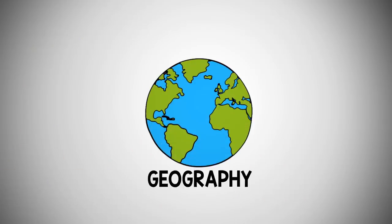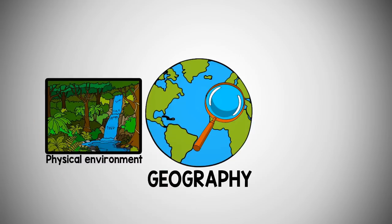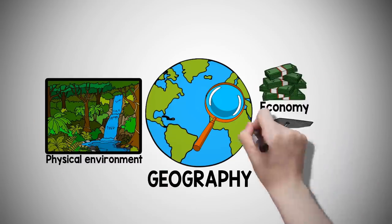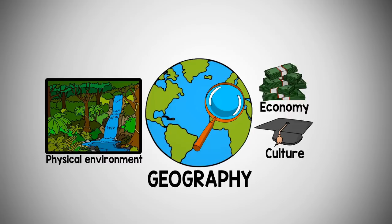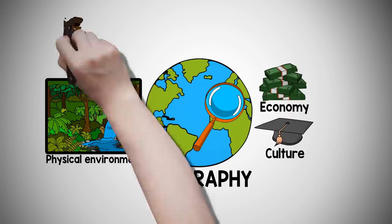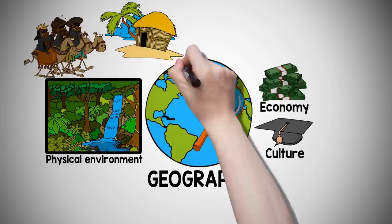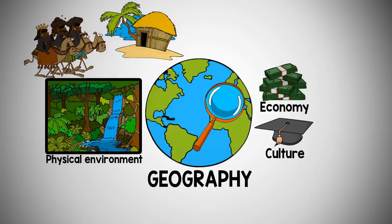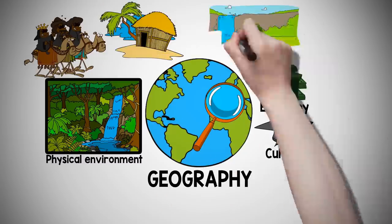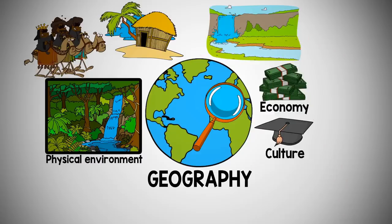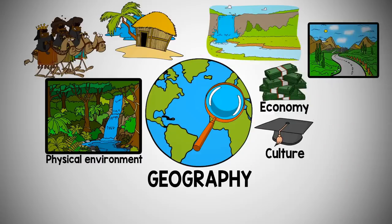The word geography, through a historian's lens, means the physical environment and how it may influence an economy and culture. Some examples may include scorching deserts that encourage nomads to move between water sources, islands where the surrounding ocean offered a food source, flooding rivers that created fertile farmland, and mountains where a resource like timber was used for building.